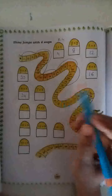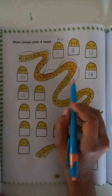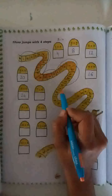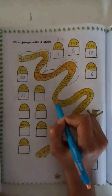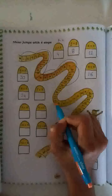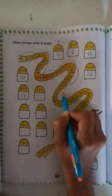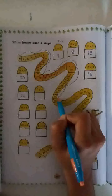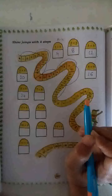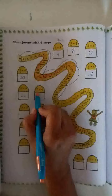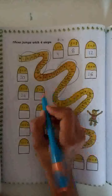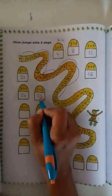Now 7 times jump — 4 steps: 1, 2, 3 and 4. Number 28. So we draw the line like this and we get the answer 28. 7 times 4 is equal to 28.